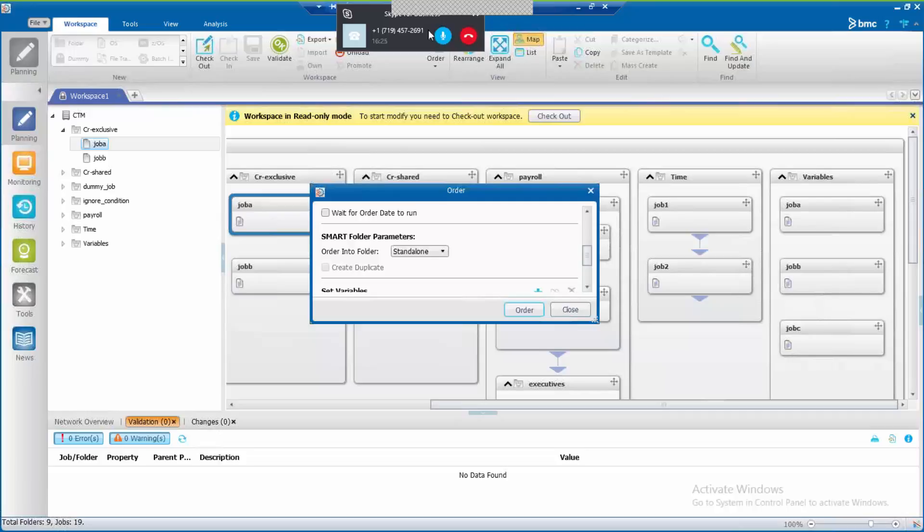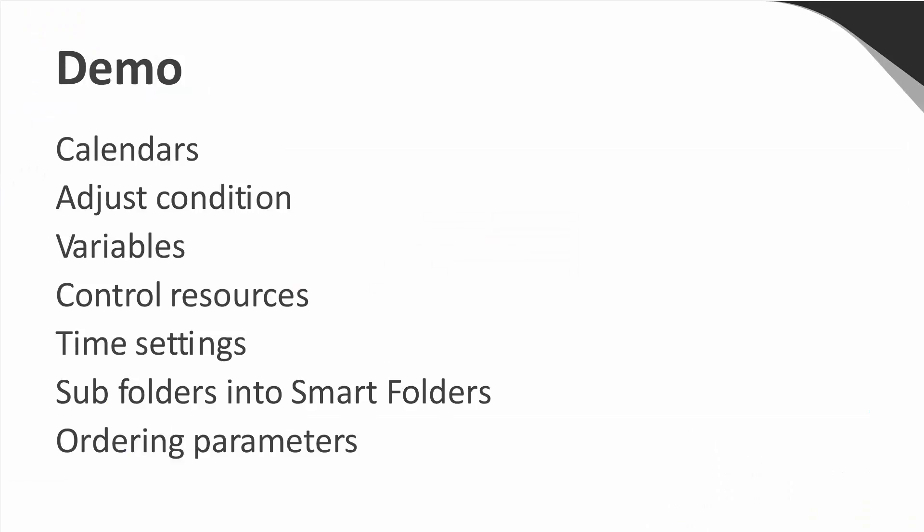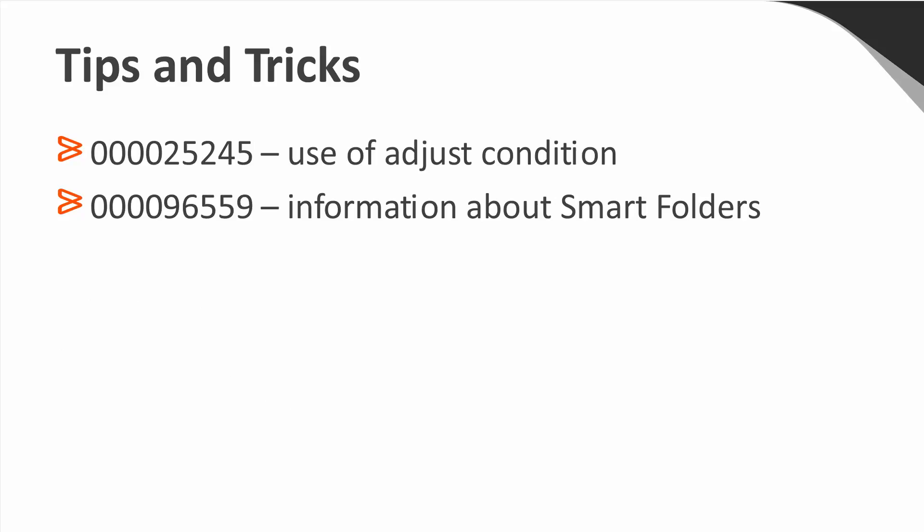Now let's go back to our presentation. This is what I demoed — I showed you some examples of calendars, adjust conditions, variables, control resources, time settings, subfolders into smart folders, and ordering parameters. Here are some articles that can help you. The first article has more details about the adjust condition feature, CTM folder adjust dummy, and CTM adjust condition scope parameters. In the second article, you will find more information about smart folders.